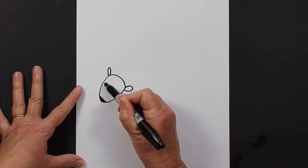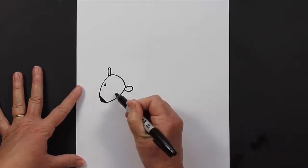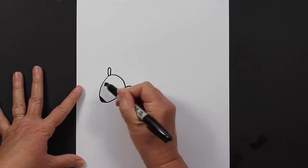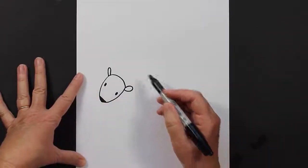Let's make some little beady black eyes. Make that one a little bit more oval.